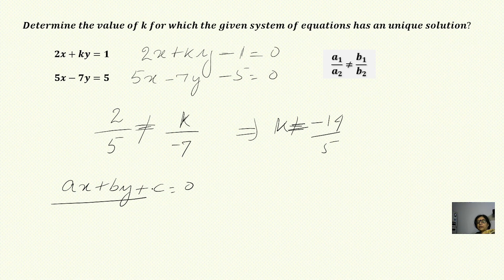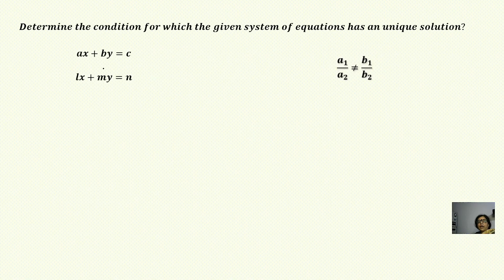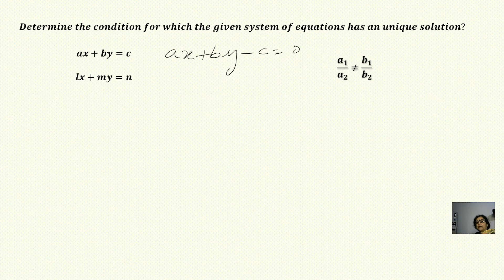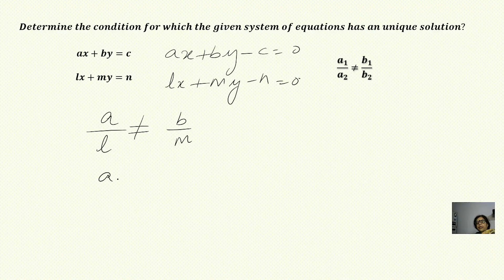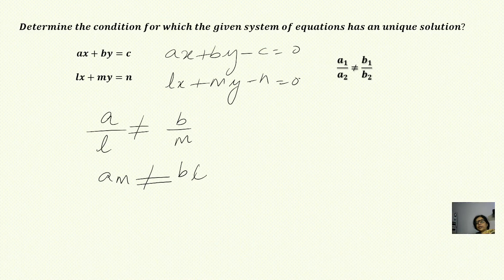The standard format is ax + by + c = 0. Moving on to the next question, we have ax + by = c, rewritten as ax + by - c = 0, and lx + my - n = 0. The condition for unique solution is a/l ≠ b/m, which on cross multiplication gives an ≠ bl.